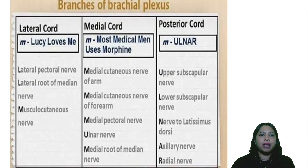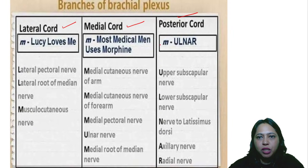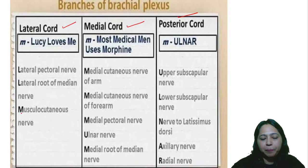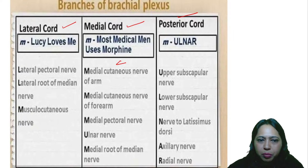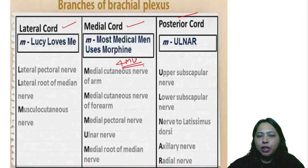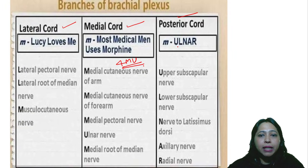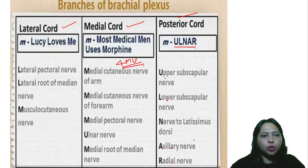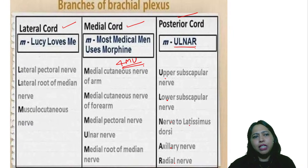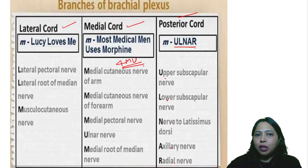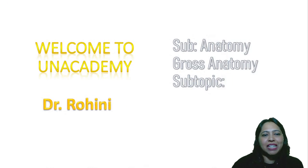For the branches of the cords: the lateral cord, medial cord, and posterior cord — remember LLM. There are mnemonics with four M's — 'Most Medical Men Use Morphine.' For the posterior cord, remember U-L-N-A-R. So you can use these mnemonics to recall all the branches of the lateral cord, medial cord, and posterior cord.